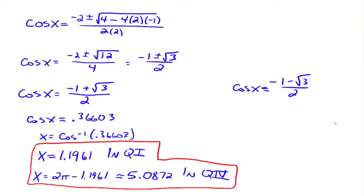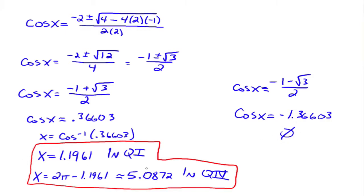For the second case, cosine x equals (negative 1 − √3) / 2, which is approximately negative 1.36603. When you take the arc cosine of negative 1.36603 in your calculator, you'll get an error. Cosine only goes between negative 1 and 1 — we can't get a value outside that range. So this equation has no solution. Therefore, there are only two solutions to the original equation: 1.1961 and 5.0872 radians.